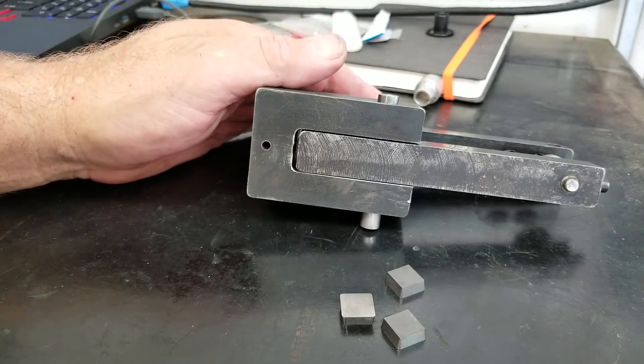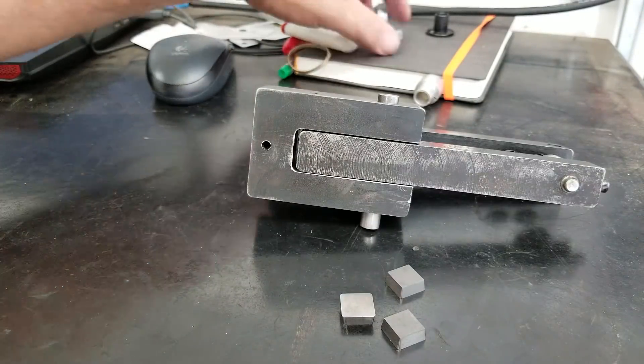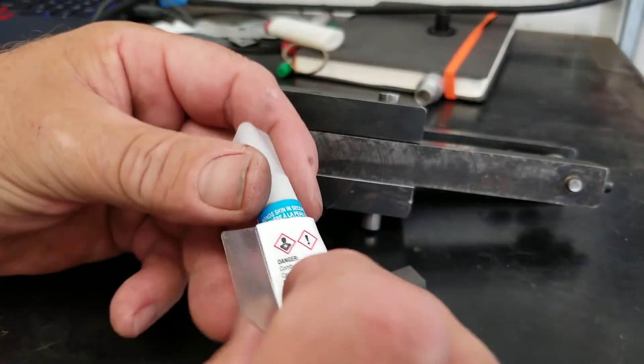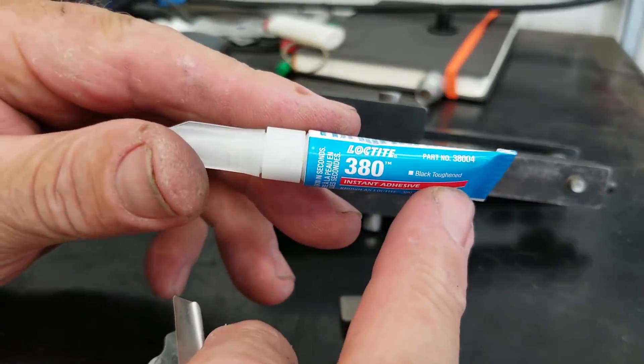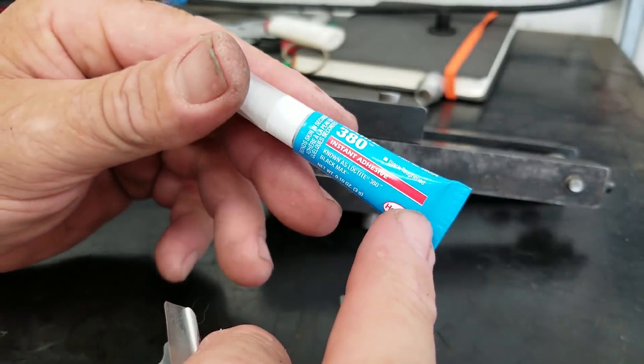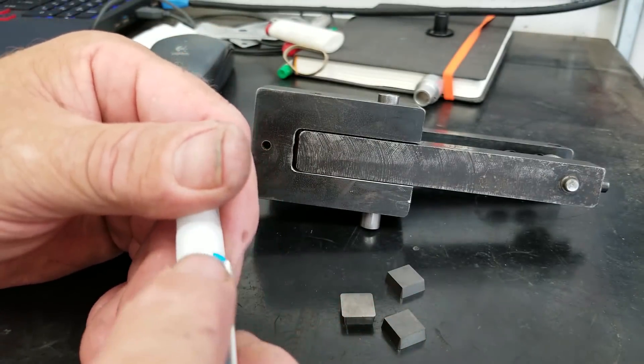After we get the feet on it, we're gonna use this stuff right here: Loctite 380. This is kind of a CA glue but it's got some body to it, it's kind of a heavy Loctite.